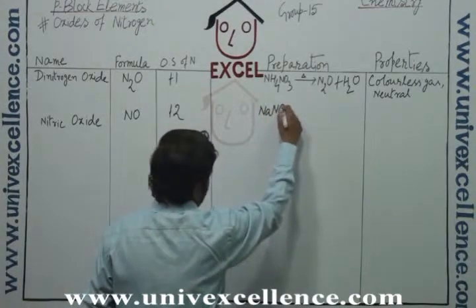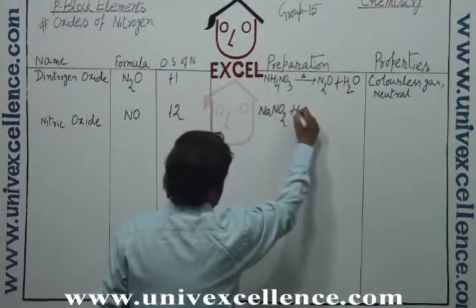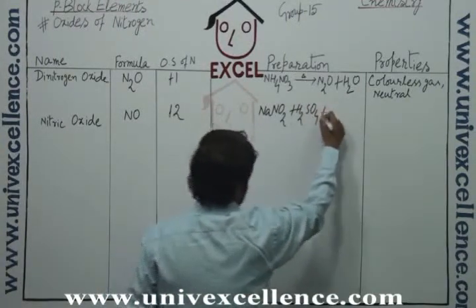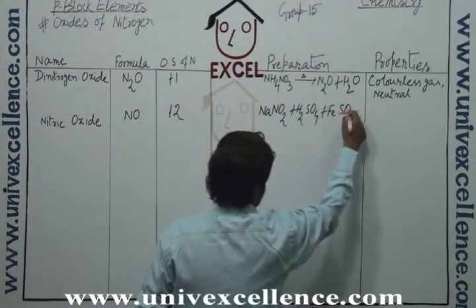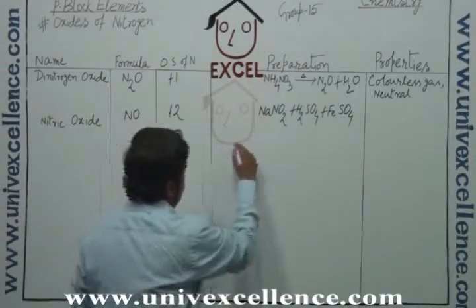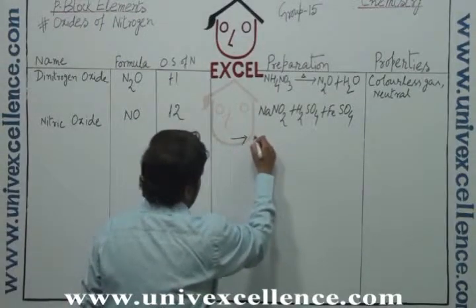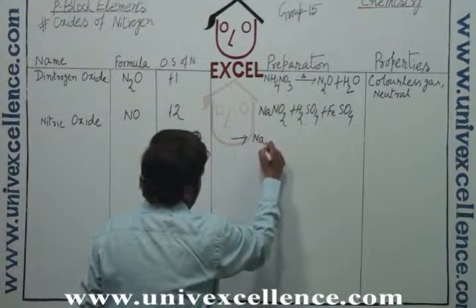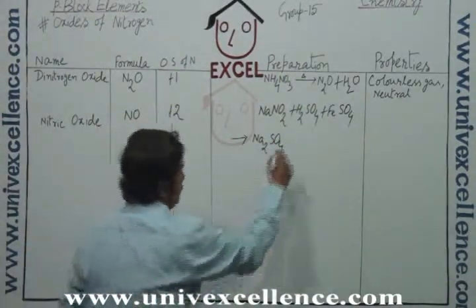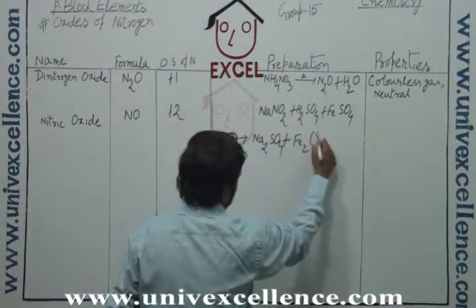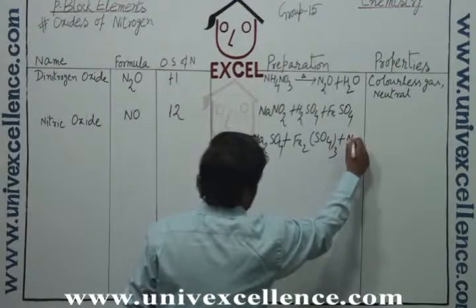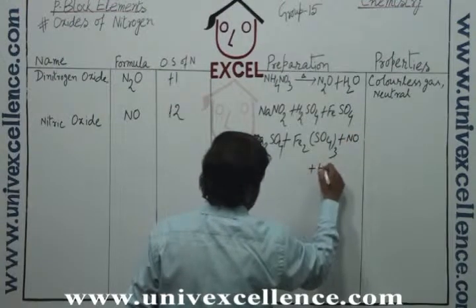The preparation of nitric oxide can be: sodium nitrite plus sulfuric acid plus ferrous sulfate. In that case, the formation of the compound is Na2SO4 sodium sulfate, Fe2(SO4)3 ferric sulfate, nitric oxide NO, plus water.